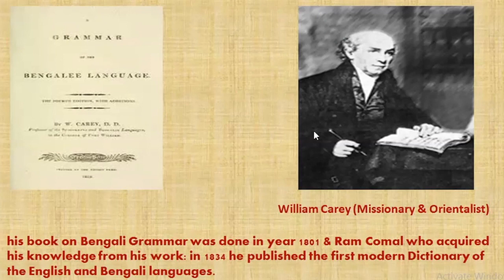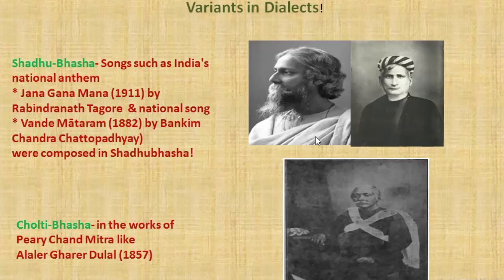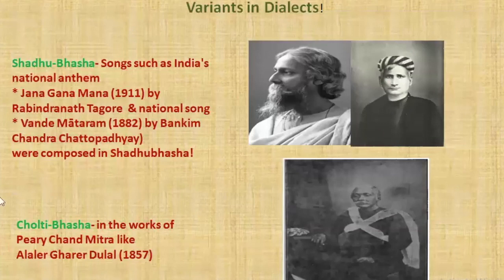Regarding the variance in dialects, let me help you understand the phenomenon through different types of Bhasha. Sadhu Bhasha — for example, India's national anthem, Jana Gana Mana by Rabindranath Tagore, and Bande Mataram by Bankim Chandra Chattopadhyay — were composed in Sadhu Bhasha. Then comes Cholti Bhasha, seen in the works of Pyarichand Mitra. These are the key differences between Sadhu Bhasha and Cholti Bhasha.